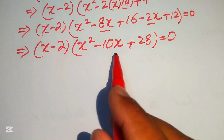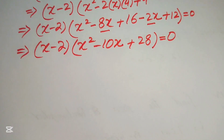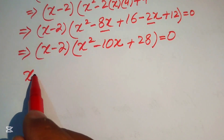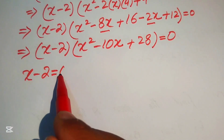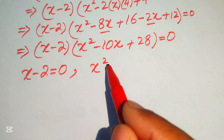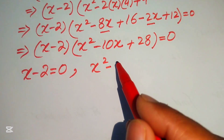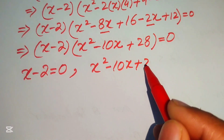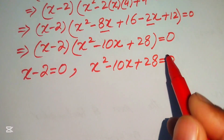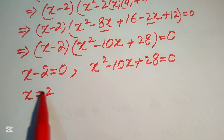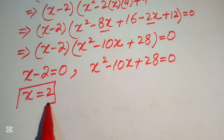The equation is now in factored form with a quadratic factor. We split into two cases: Case 1: x - 2 = 0, and Case 2: x² - 10x + 28 = 0. From Case 1 we immediately get x = 2.